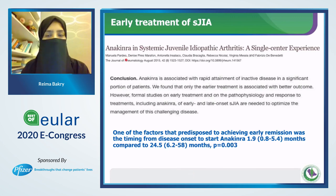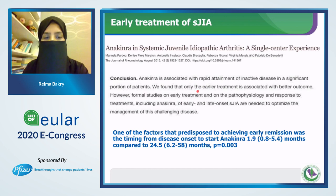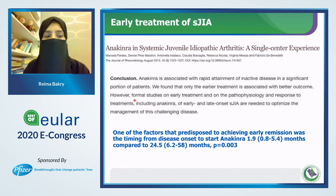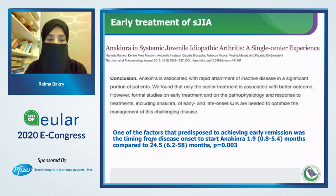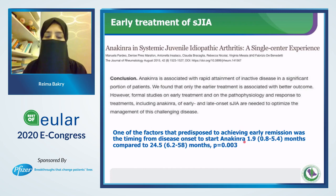The first supporting study is the anakinra in systemic JIA single center experience. They concluded that anakinra is associated with rapid attainment of inactive disease in a significant portion of patients. Early treatment was associated with a better outcome. It shows that one factor predisposing to early remission was the timing from disease onset to starting anakinra — one cohort started anakinra at a mean of 1.9 months and showed better response compared to those who started at 24 months.